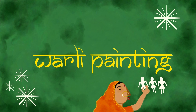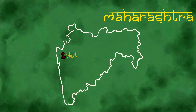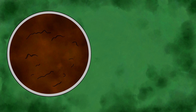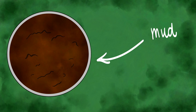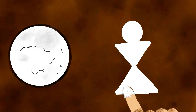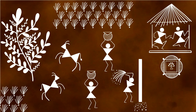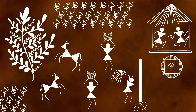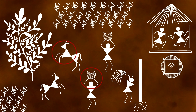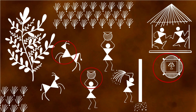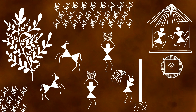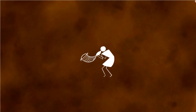Warli painting is one of the oldest forms of Indian folk art and has its origins in the Warli region of Maharashtra. The painting was done over a brown background which was a mixture of mud and cow dung cakes. The white pigment used to draw shapes and figures was a mixture of rice mixed with water and gum. This form of tribal art mainly makes use of geometric shapes such as circles, triangles, and squares to form numerous shapes depicting the life and beliefs of the Warli tribe.